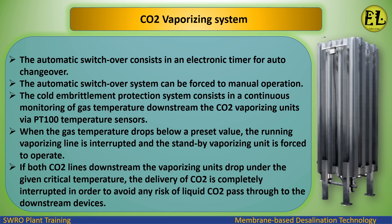The PT100 temperature sensors continuously monitor gas temperature downstream of the CO2 vaporizing units. When the gas temperature drops below the preset value, the running vaporizing line is interrupted and the standby unit is forced to operate. If both CO2 lines downstream of the vaporizing units drop below the given critical temperature, the delivery of CO2 is completely interrupted to avoid any risk of liquid CO2 passing through to the downstream devices.